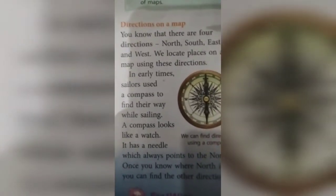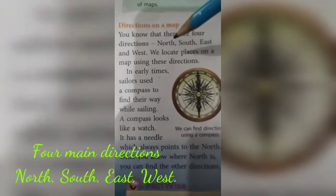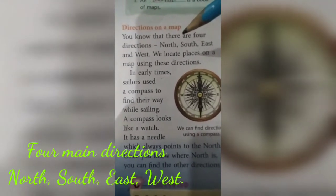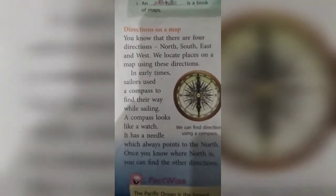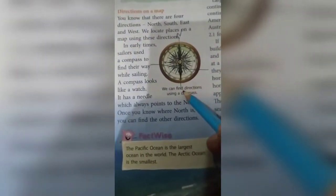Moving on to the next topic: directions on the map. There are four main directions — north, south, east, and west. Without these directions, locating any place on the map is next to impossible. If we divide the map into four parts, the upper part is north, opposite to it is south, on the left is west, and on the right is east.